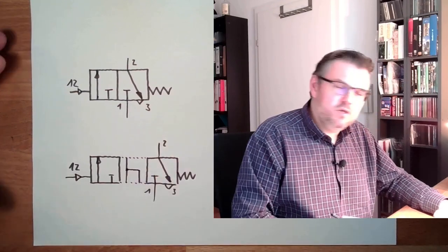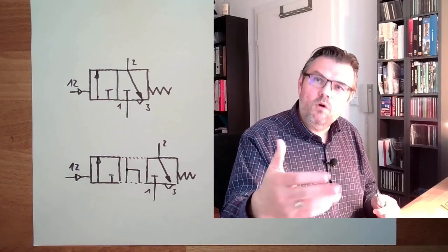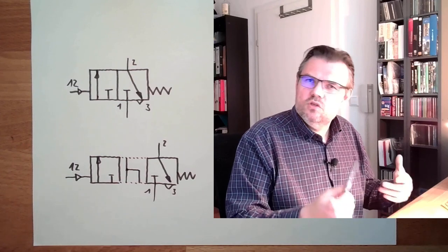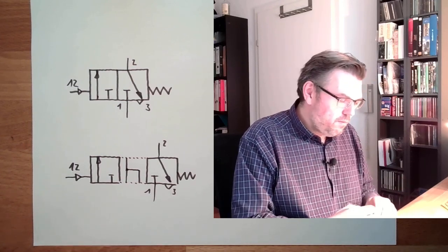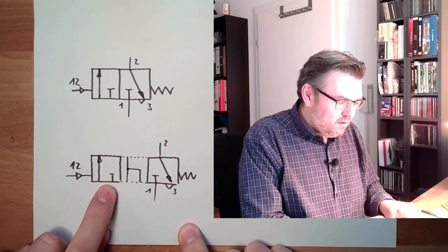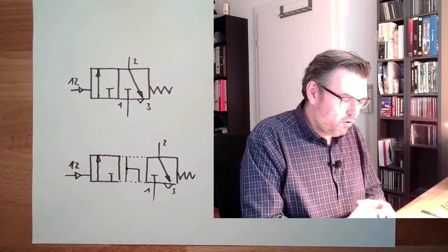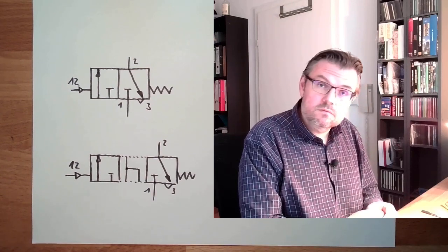But we usually don't draw it. This is in catalogs and so on, at manufacturers. If you want to purchase a valve, then it's important for you to know if this is with overlapping like this, or without overlapping, there would everywhere be this T sign. So all are blocked. This is the symbol of this valve here.